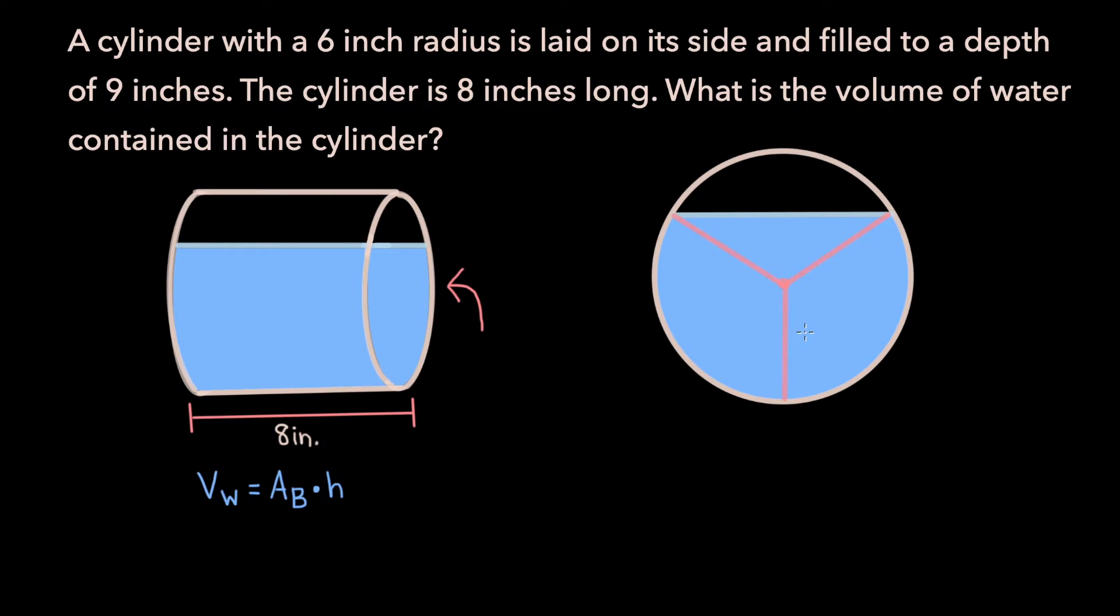Now, if we label the lengths we know, the problem tells us that the radius of the circle is 6 inches, and that the height of the water, which is this height right here, is 9 inches. And this means that the height of our triangle is 9 minus 6, or 3 inches.